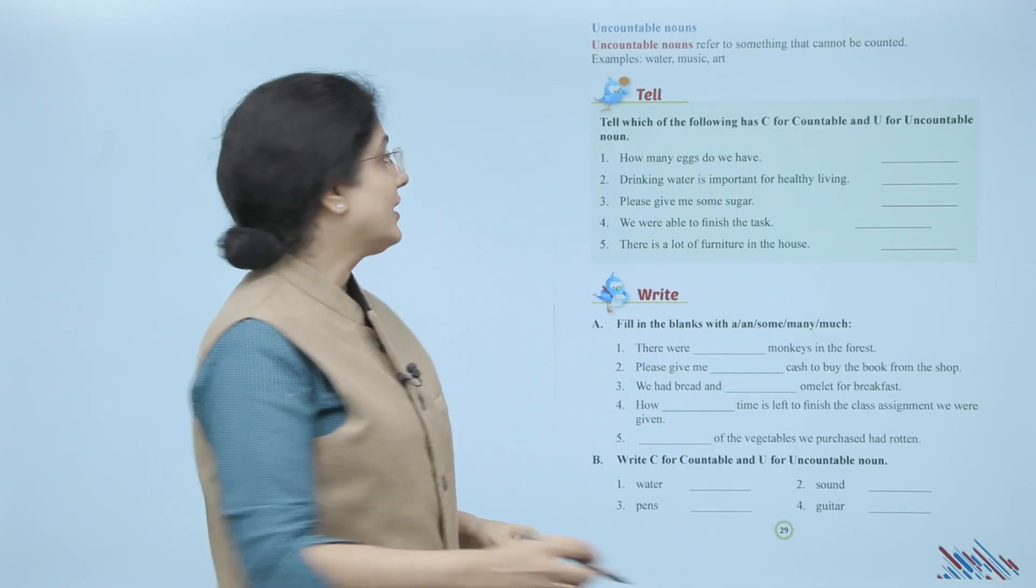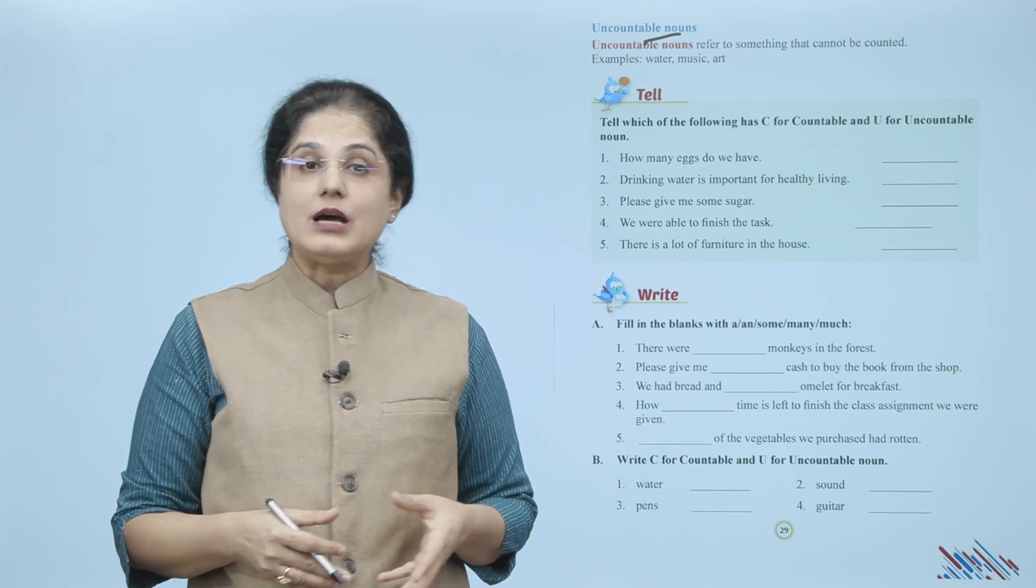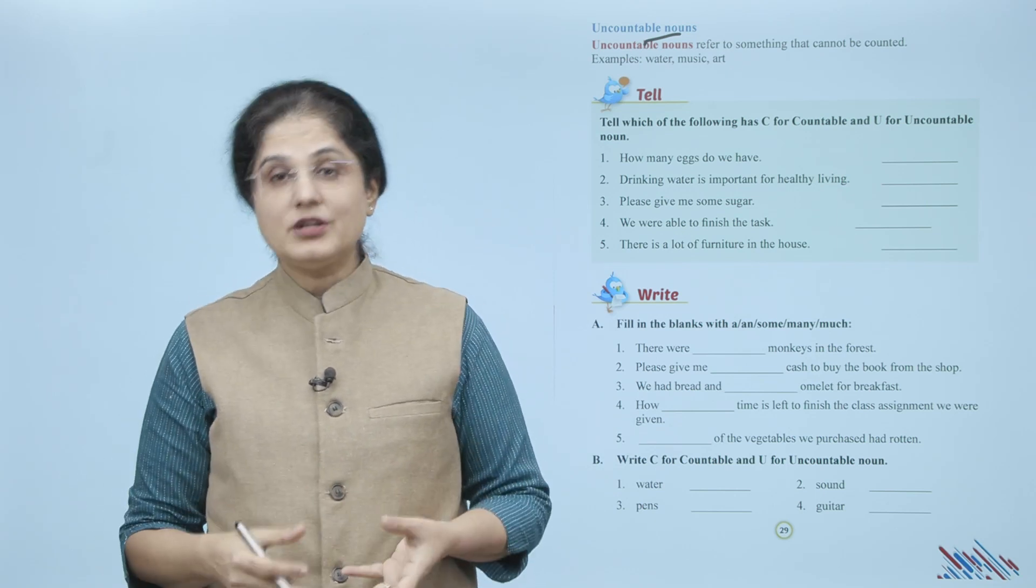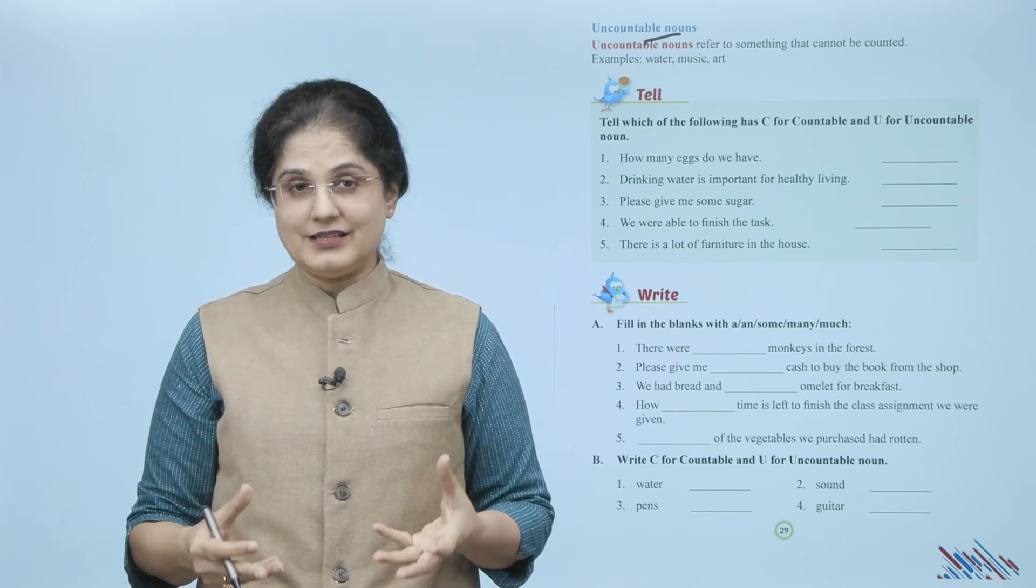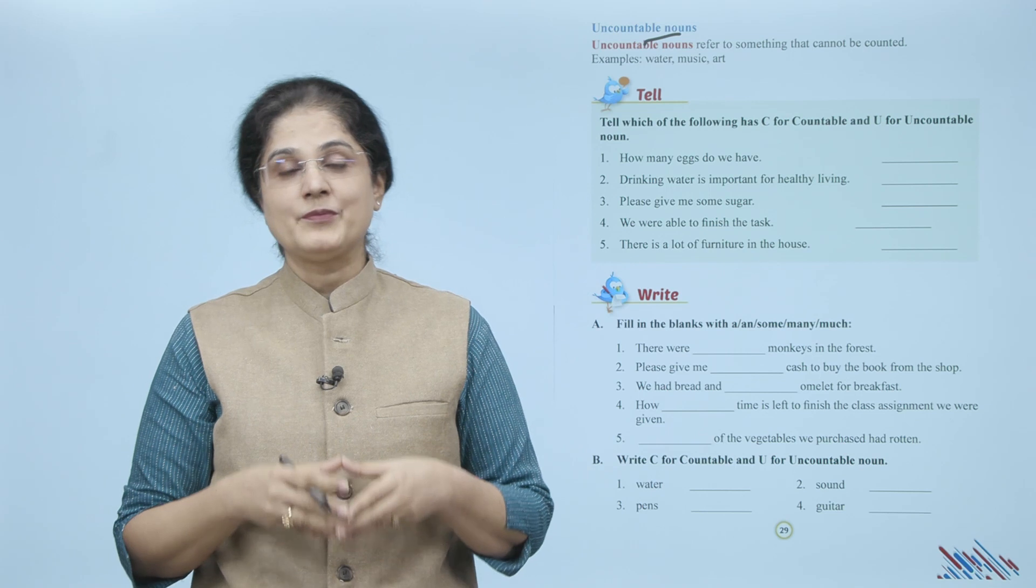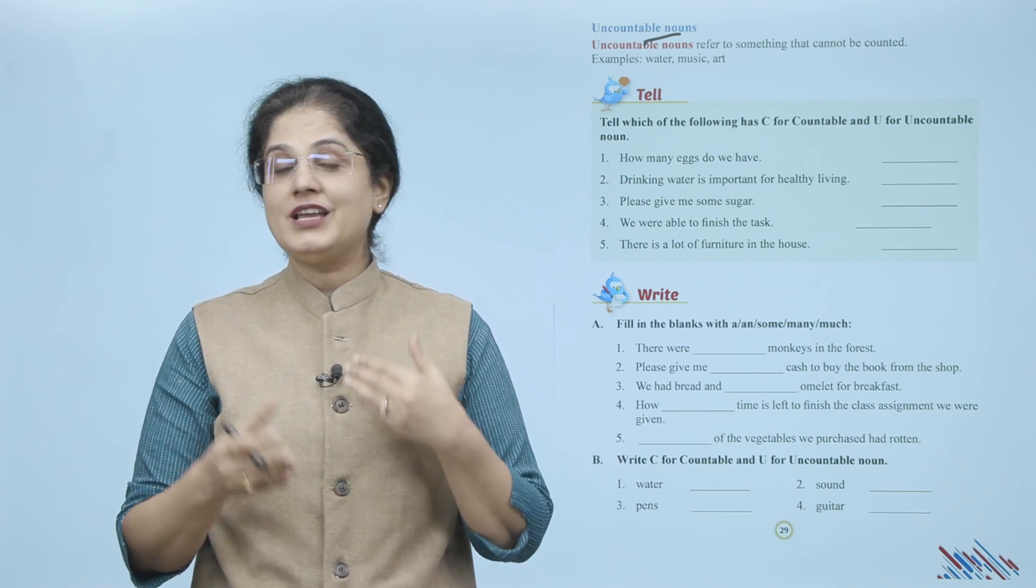Now let us look at uncountable nouns. Uncountable nouns refer to something that cannot be counted. Jin nouns ko aap count nahi kar sakte unhye hum uncountable nouns kehte hain. For example: water, music, art - in cheezon ki aap ginti nahi kar sakte, inko count nahi kar sakte.